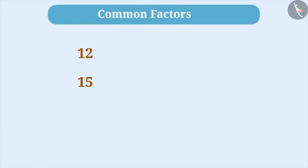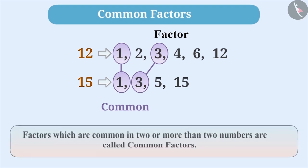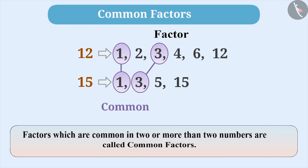Now let's look at these numbers. Let's find the factors of these numbers. Factors of 12 are 1, 2, 3, 4, 6, and 12, and factors of 15 are 1, 3, 5, and 15. If you observe, you will get to know that the numbers 1 and 3 are the common factors of both 12 and 15. This means they are common in both the lists. The factors which are common among the factors of 2 or more than 2 numbers are called common factors.